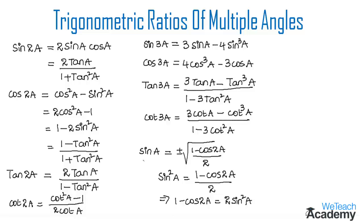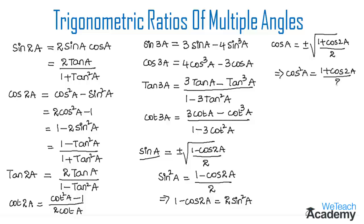Cos A is equal to plus or minus under root of (1 plus cos 2A) divided by 2, where 2A represents the multiple angle. From this formula, cos square A is equal to (1 plus cos 2A) divided by 2, and 1 plus cos 2A equals 2 cos square A.